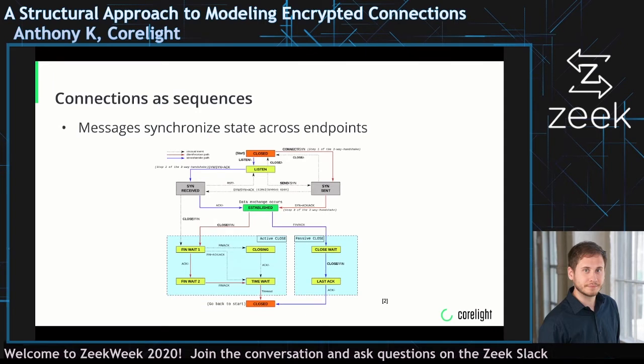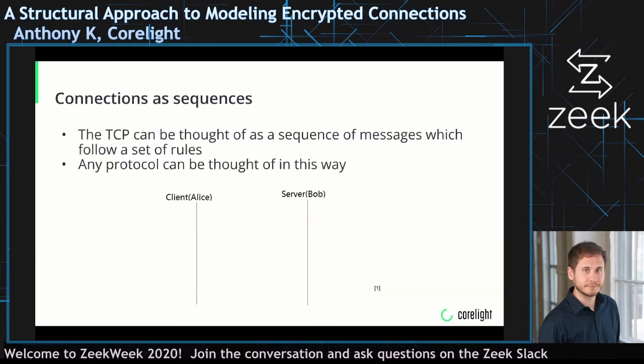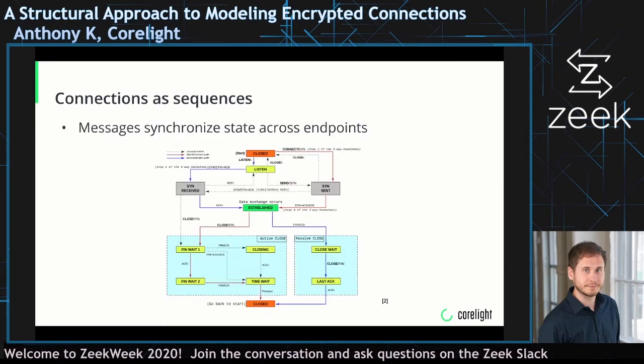This is a state machine diagram of the TCP state machine that I pulled from Wikipedia. What I want to impress upon people here is that this sequence of events — the TCP handshake — actually translates into a state machine. Upon sending a SYN packet, the client will enter the gray box on the right. After the handshake, both sides of the connection will enter the established green box in the center. The connection will be used, and then upon exchanging FIN or reset messages, the connection moves into the orange box at the bottom, which is closed.